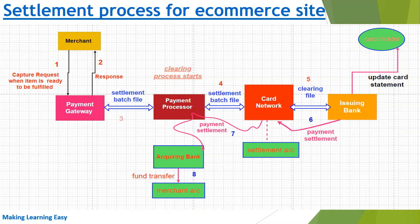After receiving the capture request, the payment gateway does internal validations. If the request is fine, it returns a response to the merchant application immediately. The payment gateway then creates a batch file related to settlement. This batch runs every three to four hours or at the end of the day. The payment gateway adds the settlement details to the batch file and sends it to the payment processor for further processing. Once the payment processor receives the settlement file, the clearing process starts. The payment processor sends the batch file to the card network for further processing.